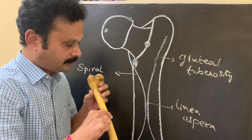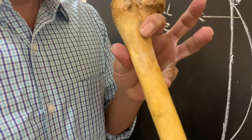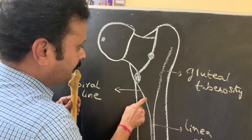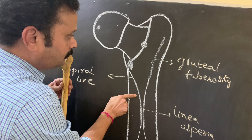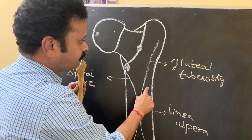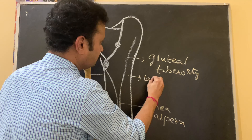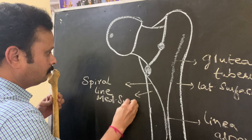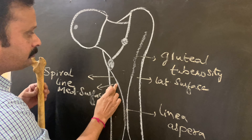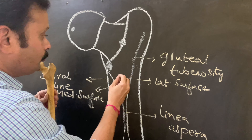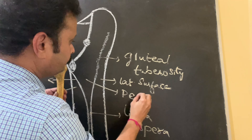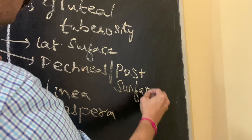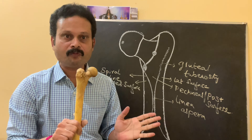The region between the medial border and lateral border in front forms the anterior surface, just like in the middle one third. The region between the medial border and the spiral line forms the medial surface. The region between the lateral border and the gluteal tuberosity forms the lateral surface. The remaining part between the spiral line and the gluteal tuberosity forms the posterior surface or pectineal surface.